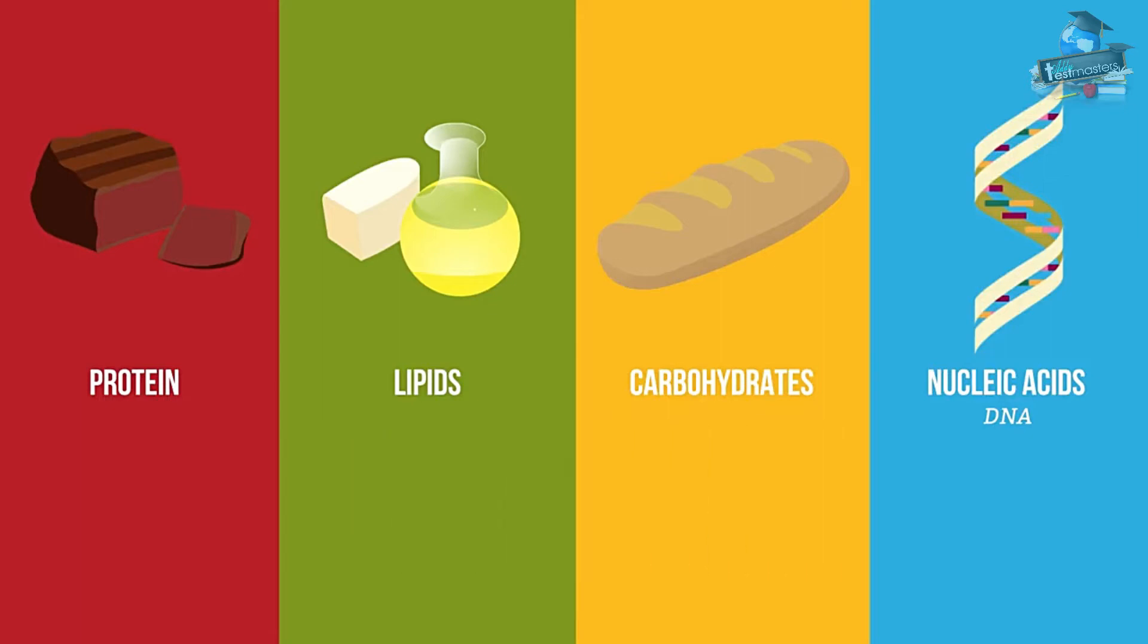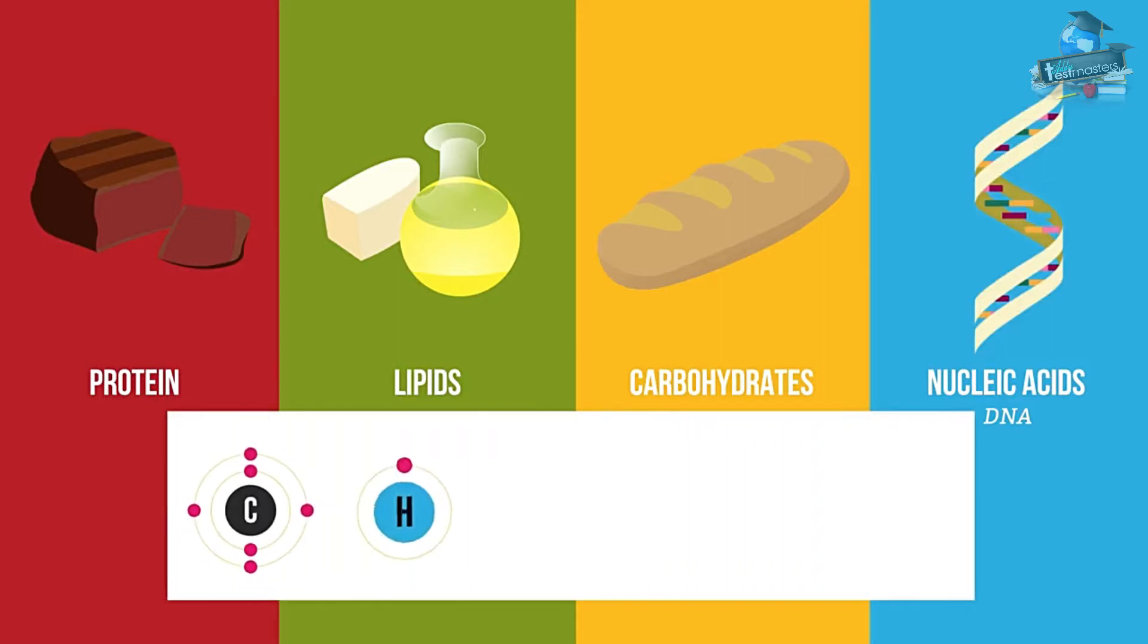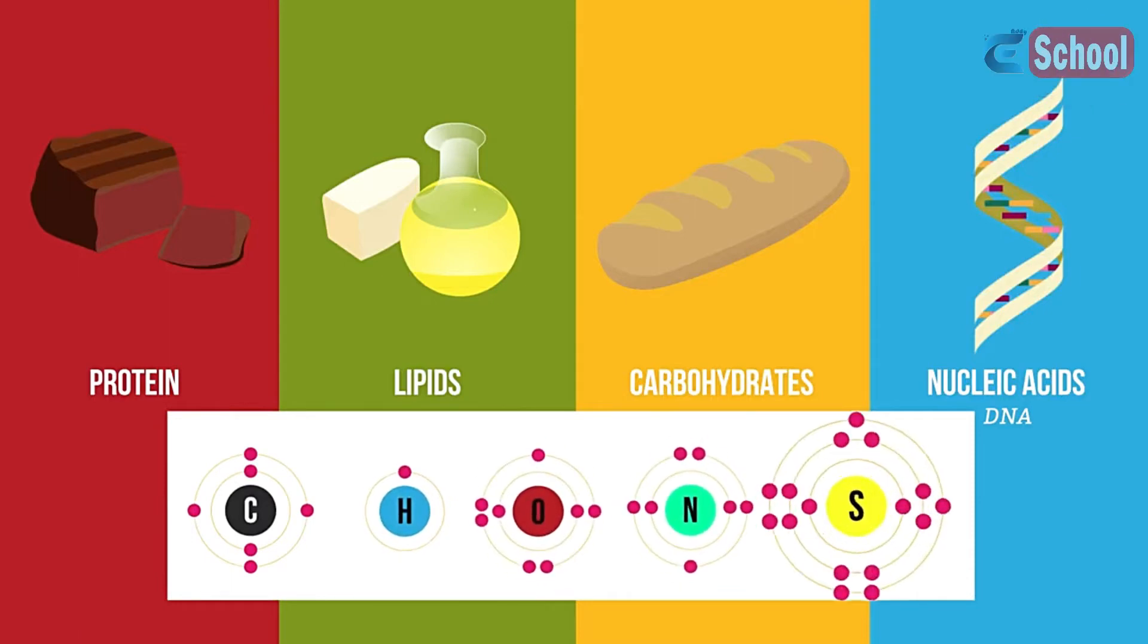Proteins are a little more complex, with four or five elements: carbon, hydrogen, oxygen, nitrogen, and sometimes sulfur.